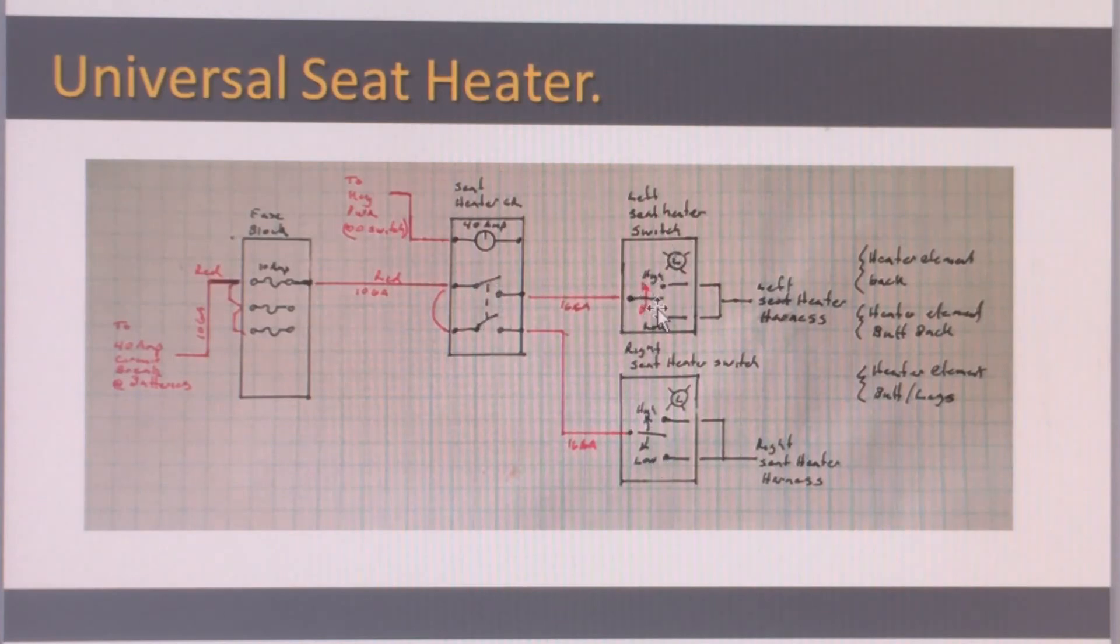So the switch goes low or high or off and it's illuminated. The switches are illuminated showing you that they're on. They don't show you whether you're in high or low. So you have to just note the position of the switch to be able to tell that. And then the harness goes to the individual seat heater elements and each of those have two or, in my case, three elements.